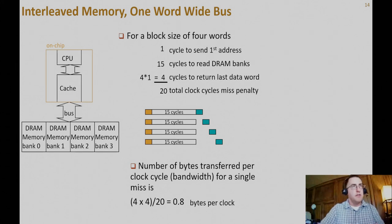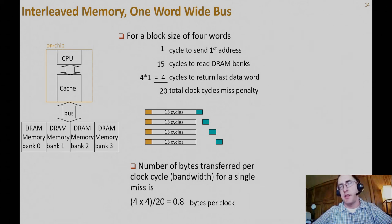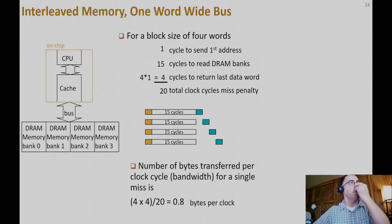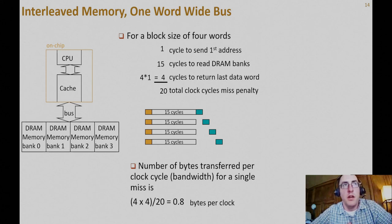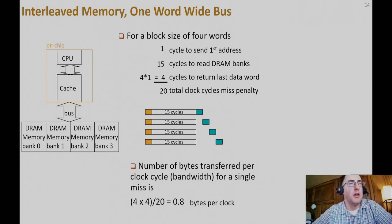The next logical improvement is widening the bus. If the bus size equals the block size, you can return a block in one bus cycle — for example, a 128-bit bus could return all four words in one cycle. But that requires four times as many wires. There's always a tradeoff between how much hardware you're willing to put in your computer versus how much more throughput you can squeeze out.